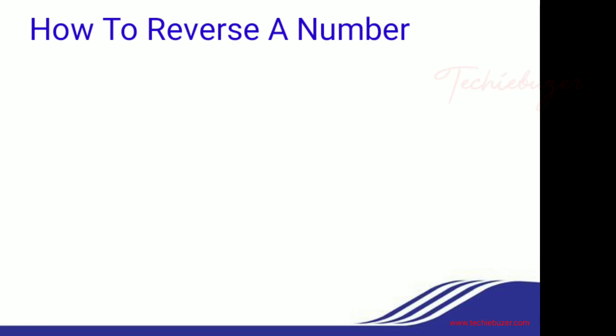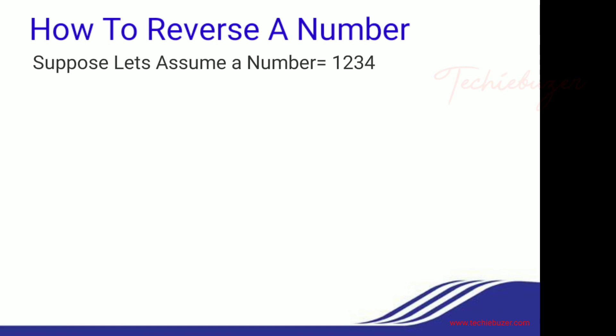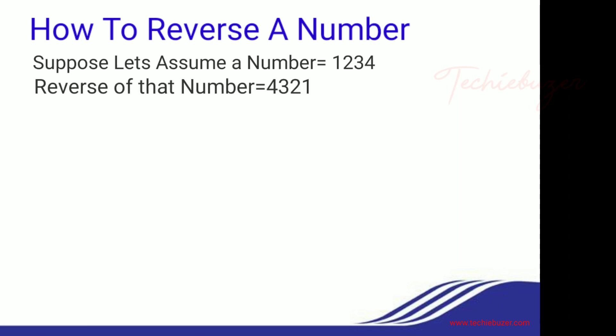First of all, we will discuss the logic for this program. We will assume a number, say 1234, and the reverse of the number will be 4321. Now the question arises: how to achieve it? For this, we need to remember that if we divide a number by 10, then the remainder we get will be the last digit.